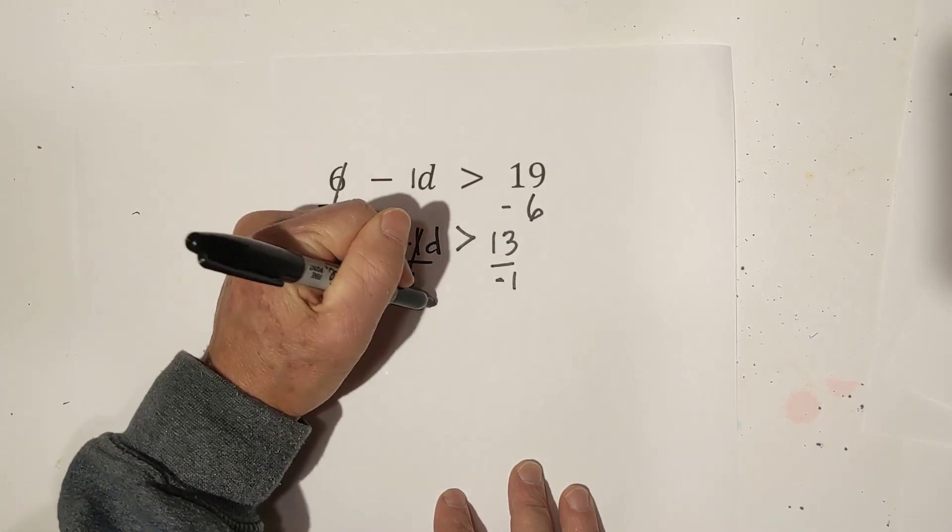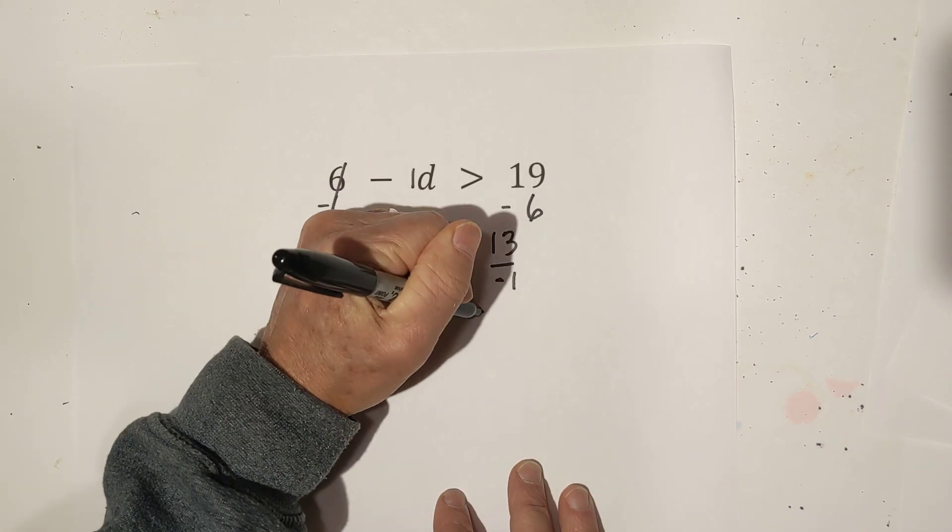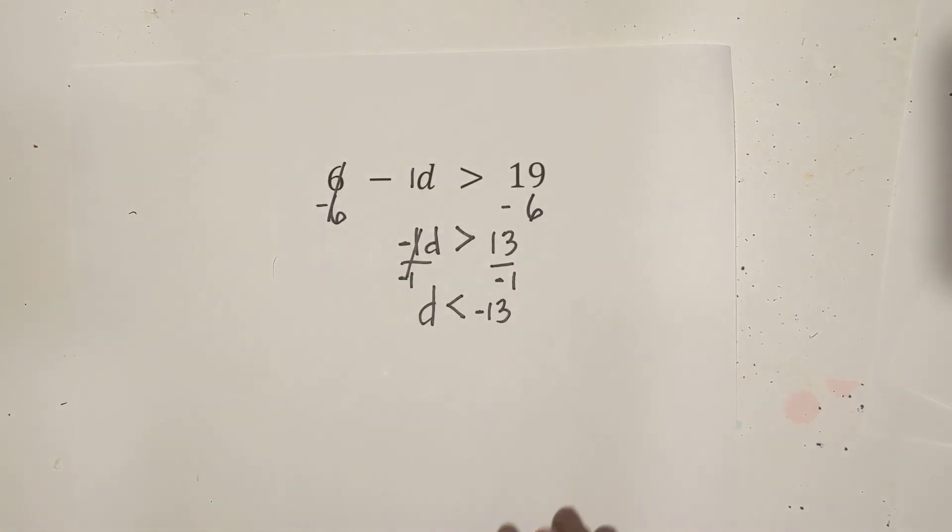These cancel. Bring down a d. Since I divided by a negative 1 we're going to flip the sign and that becomes a negative 13. So there we go. Thanks for watching and remember kindness multiplies kindness. Be kind to someone today.